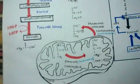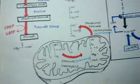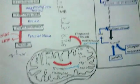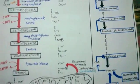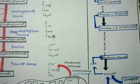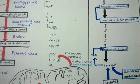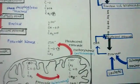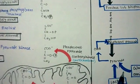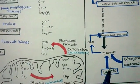Next, we are going to talk about gluconeogenesis. Gluconeogenesis is essentially the reversal of glycolysis, but not an exact reversal — there are three steps which are different from glycolysis.